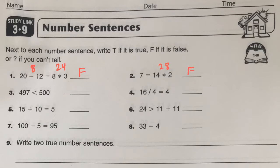Next up, this would be read 497 is less than 500. And that is a number sentence, and it is true. And I think you can keep going with these.